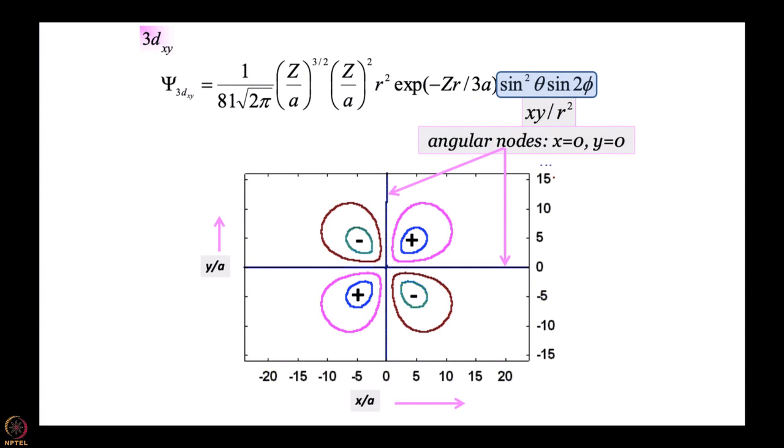Now we come to 3d xy. Sin square theta sin 2 phi - again using the relationship between sin 2 phi and sin phi cos phi. What is sin 2 phi? Sin 2 phi is essentially 2 sin phi cos phi. So sin square theta multiplied by sin theta sin phi multiplied by sin theta cos phi. So you get xy, and of course it has to be divided by r multiplied by r, so you get xy by r square. So xy equal to 0 - xy equal to 0 means x equal to 0 is a node and y equal to 0 is a node. So once again, the moment you cross wherever you cross the node, wave function has to change sign. So this is 3d xy.